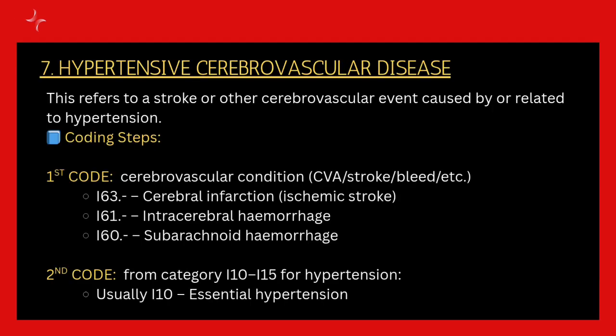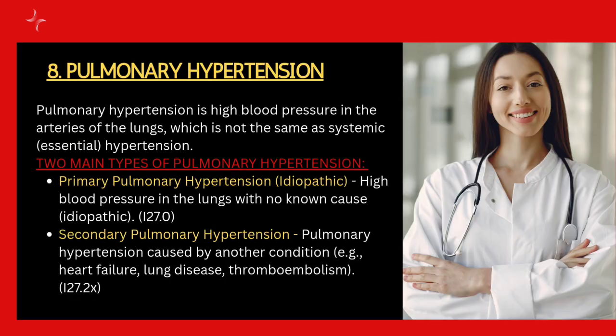Next is hypertensive cerebrovascular disease, which refers to a stroke or other cerebrovascular event caused by related hypertension. The first code should be for the cerebrovascular condition — whether it is CVA, stroke, or bleed. The second code depends on whether it is cerebral infarction or hemorrhage, and you assign the code based on that.